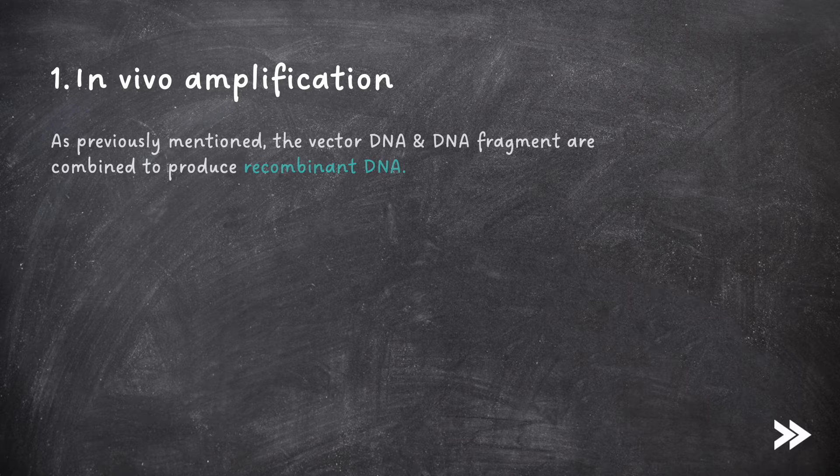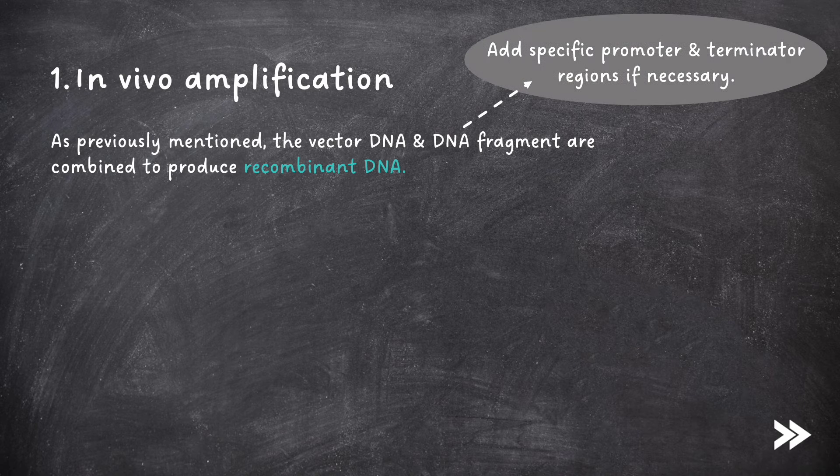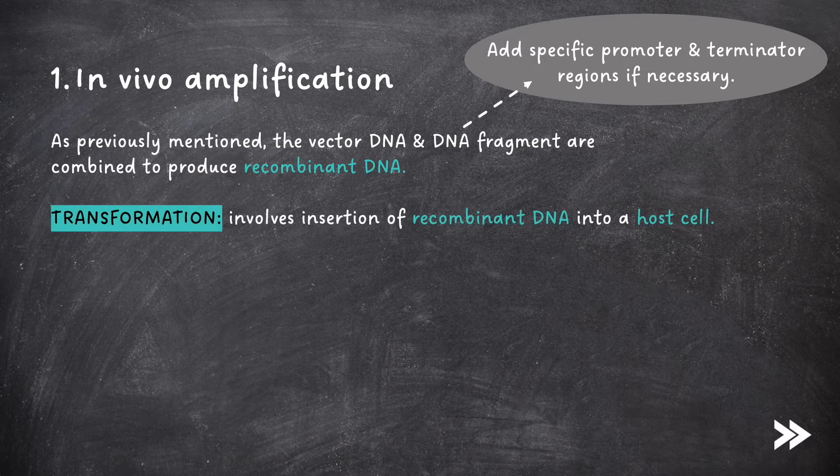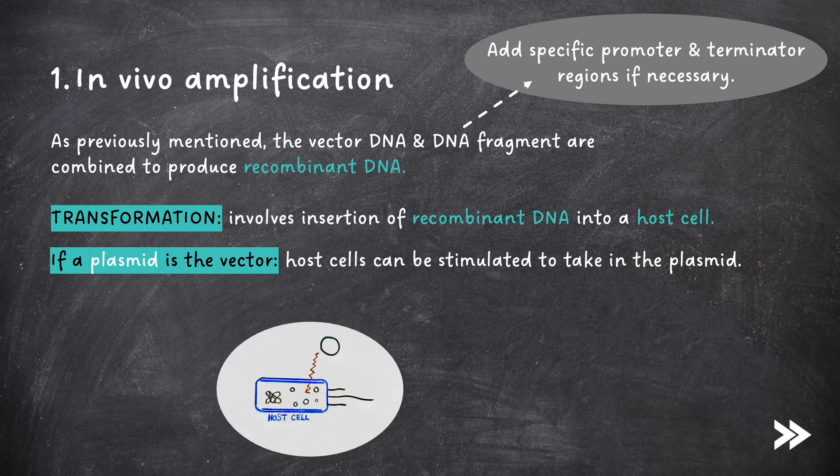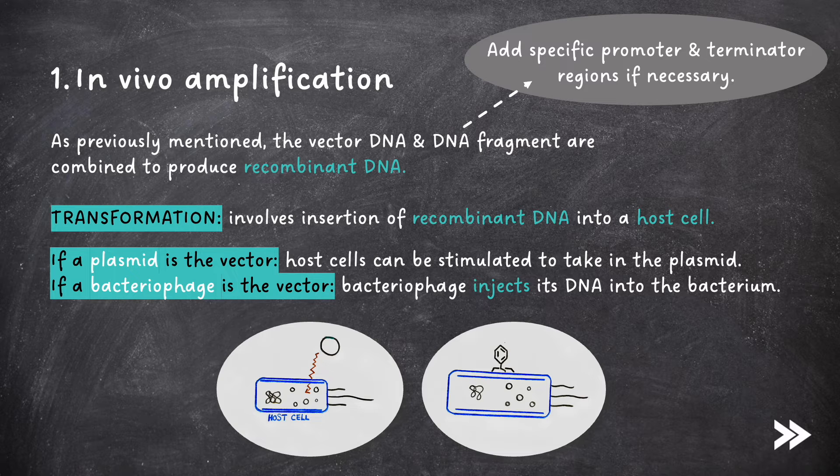As previously mentioned, the vector DNA and DNA fragments are combined to produce recombinant DNA. We need to add specific promoter and terminator regions if necessary, and I'll cover what these are specifically in just a moment. The first step in in vivo cloning is transformation, which involves insertion of the recombinant DNA into a host cell. If a plasmid is the vector, host cells can be stimulated to take in the plasmid. If a bacteriophage is the vector, the bacteriophage injects its DNA into the bacterium.